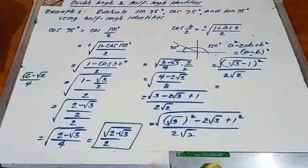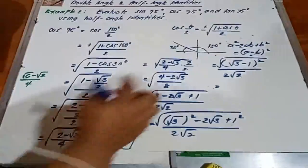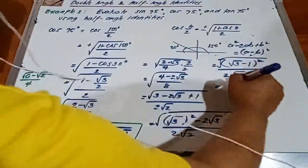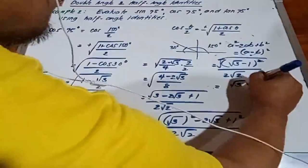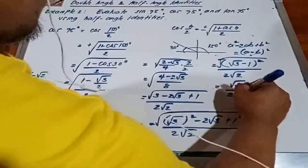Next, pwede natin itong ilabas kasi cancel na yung radical form, kasi perfect square siya. So magiging square root of 3 minus 1 over 2 square root of 2.